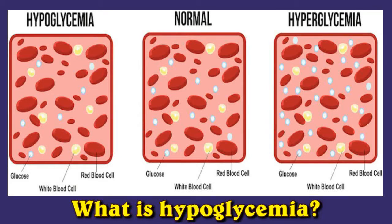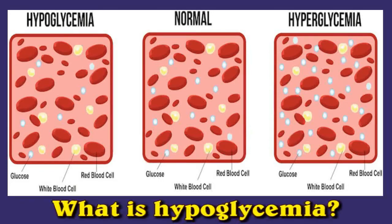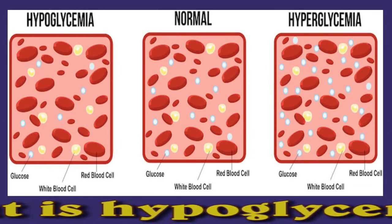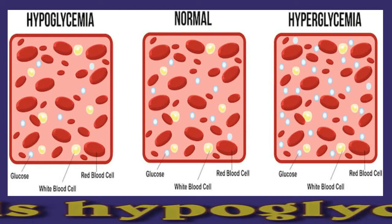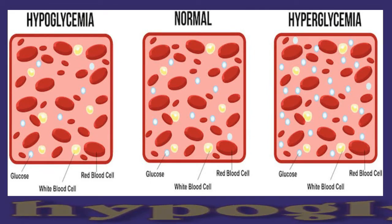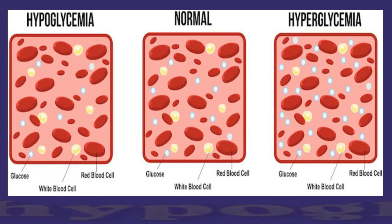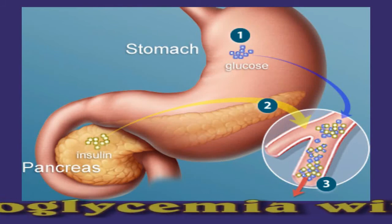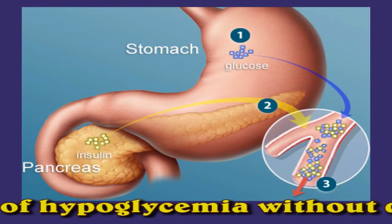Insulin helps the body's cells absorb sugar from the bloodstream. A person with diabetes may take insulin shots because their body is resistant to insulin or because it does not produce enough. In people with diabetes, taking too much insulin can cause blood sugar levels to drop too low. Not eating enough or exercising too much after taking insulin can have the same effect. However, people who do not have diabetes can also experience hypoglycemia.